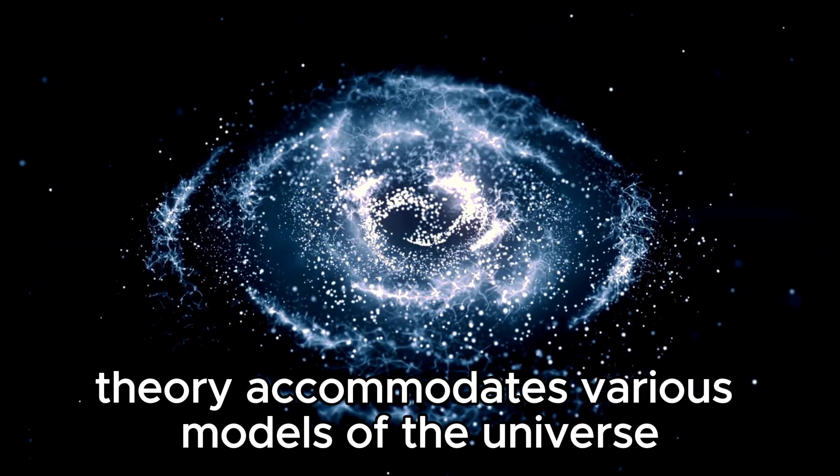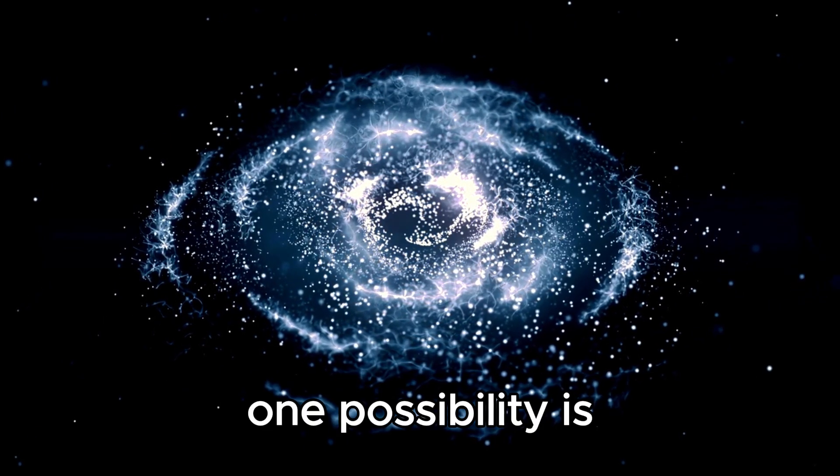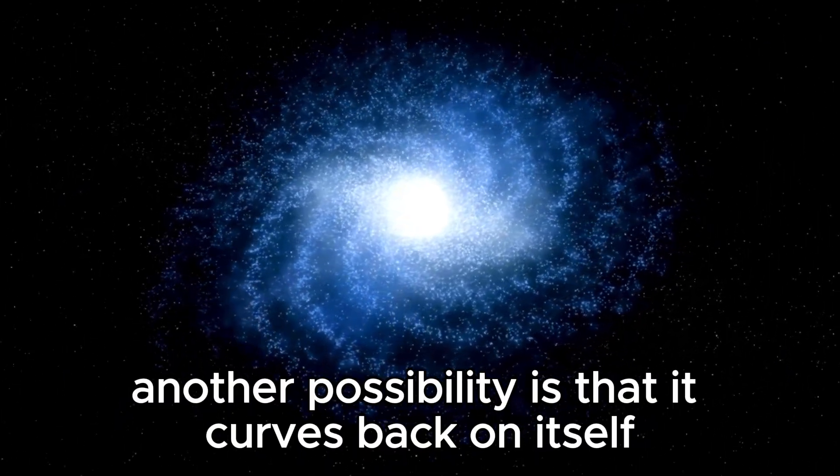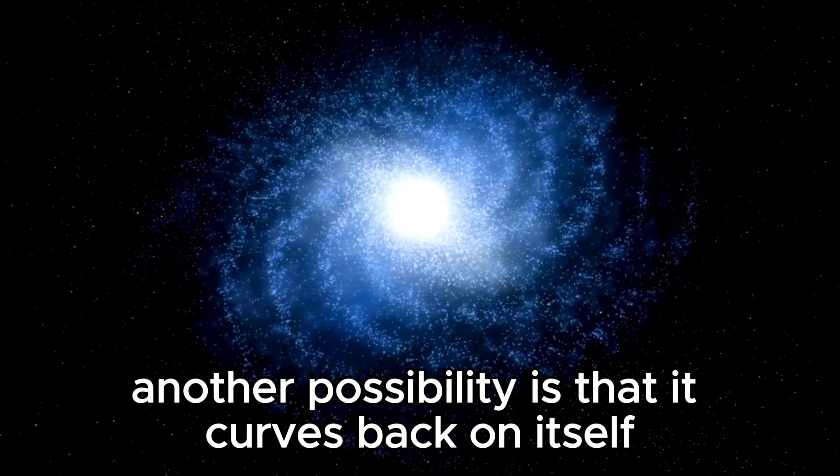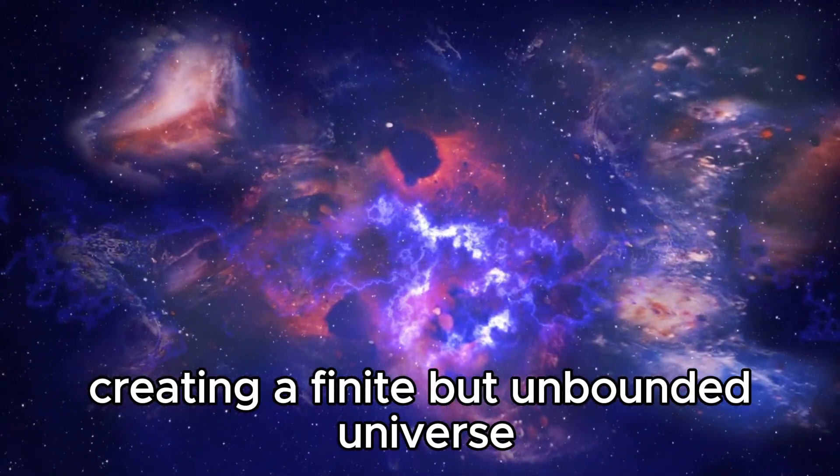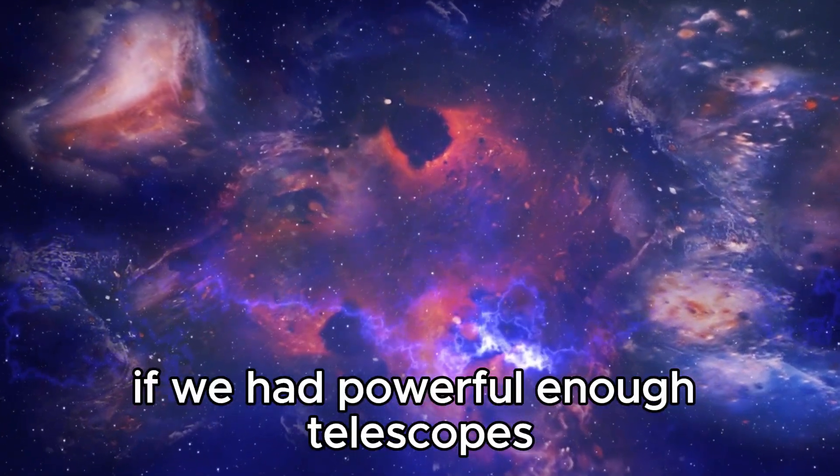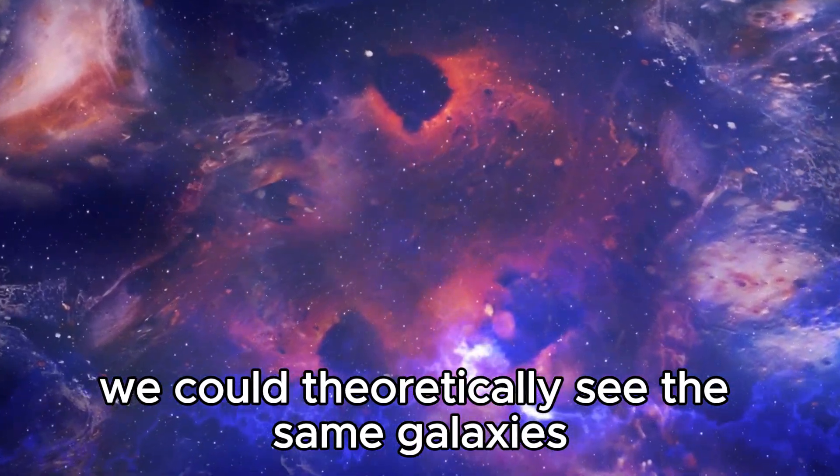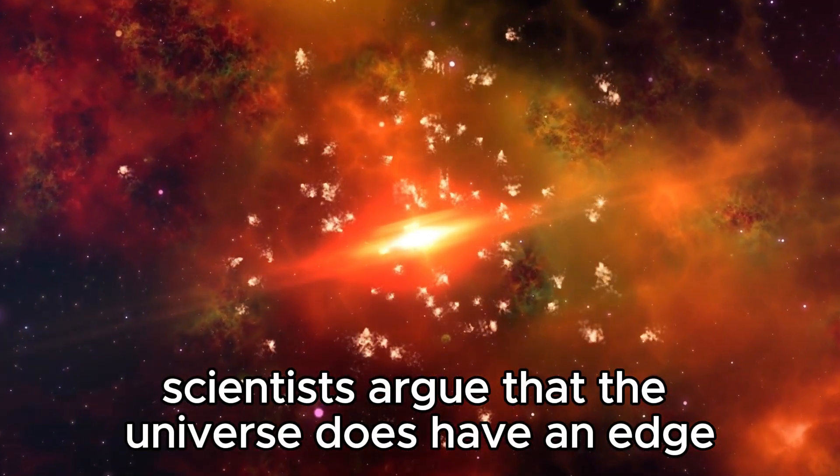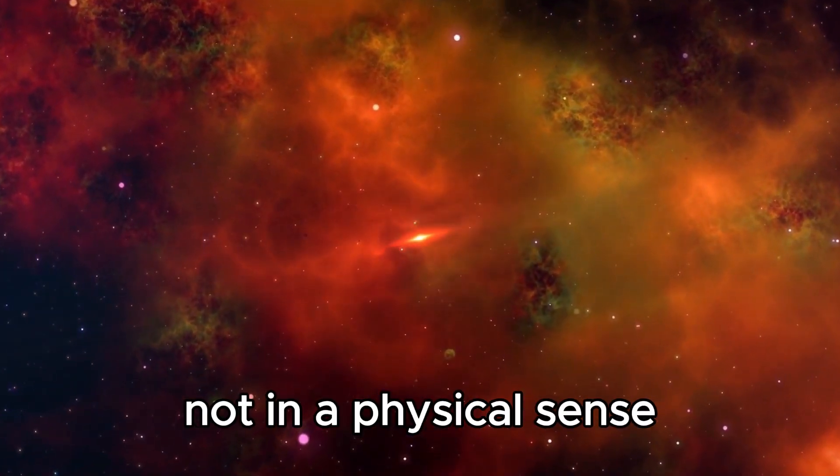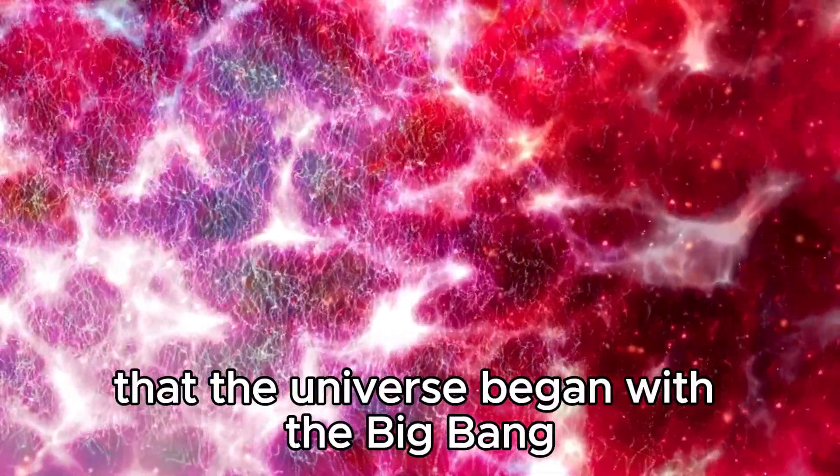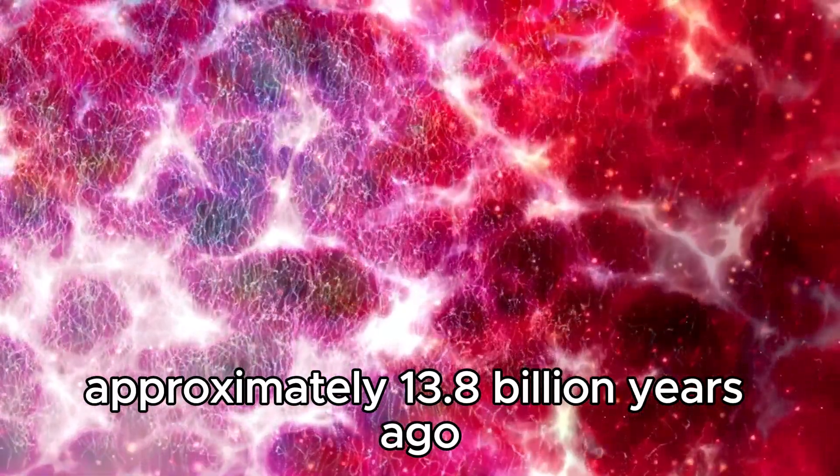Einstein's theory accommodates various models of the universe. One possibility is that the universe stretches infinitely with no boundaries. Another possibility is that it curves back on itself like the surface of a higher dimensional sphere, creating a finite but unbounded universe. In this latter scenario, if we had powerful enough telescopes, we could theoretically see the same galaxies on opposite sides of the universe. Some scientists argue that the universe does have an edge, not in a physical sense but in terms of time and visibility. They point out that the universe began with the Big Bang approximately 13.8 billion years ago.